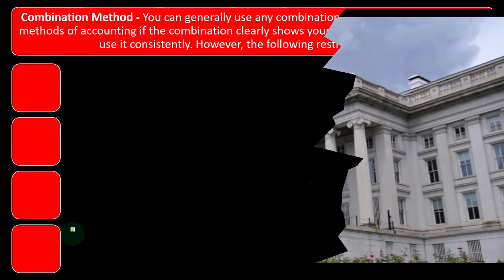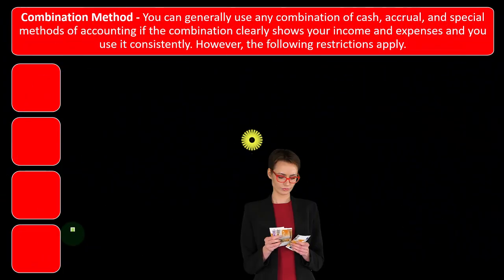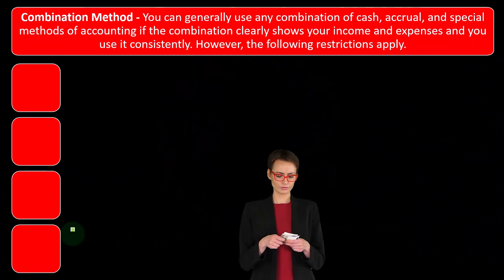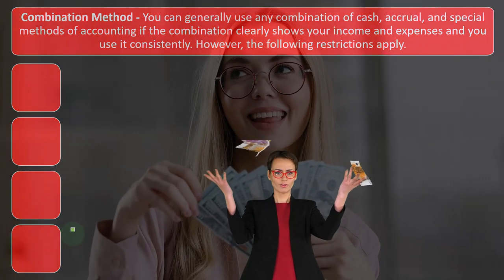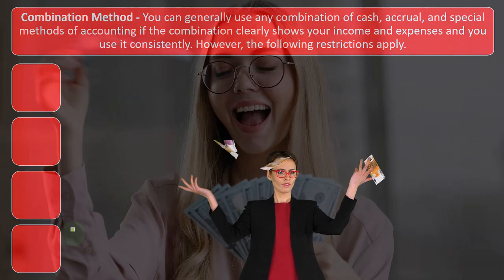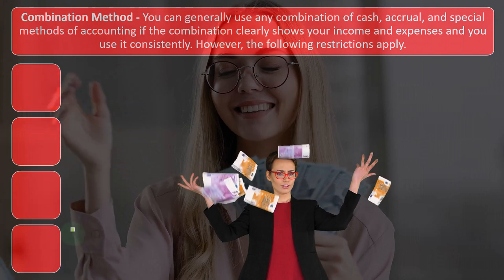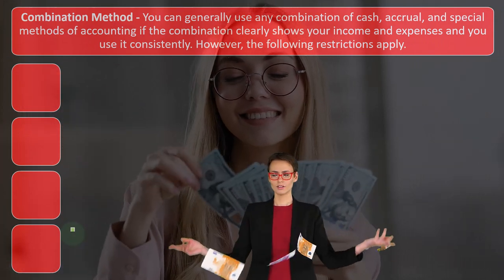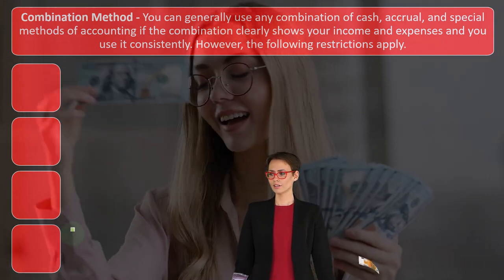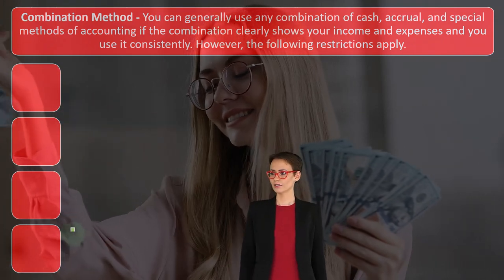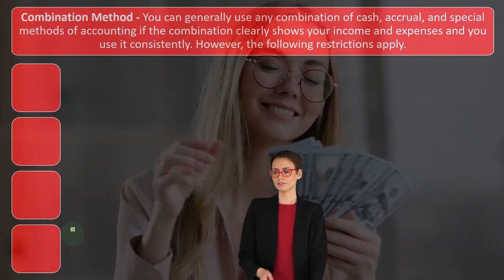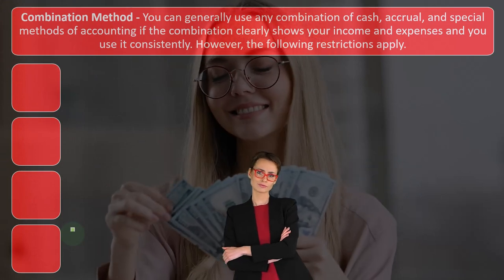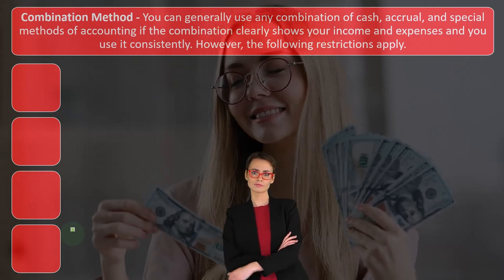So now we're on a combination method. You can generally use a combination of cash, accrual, and special methods of accounting if the combination clearly shows your income and expenses and you use it consistently. Consistency is the key component here.